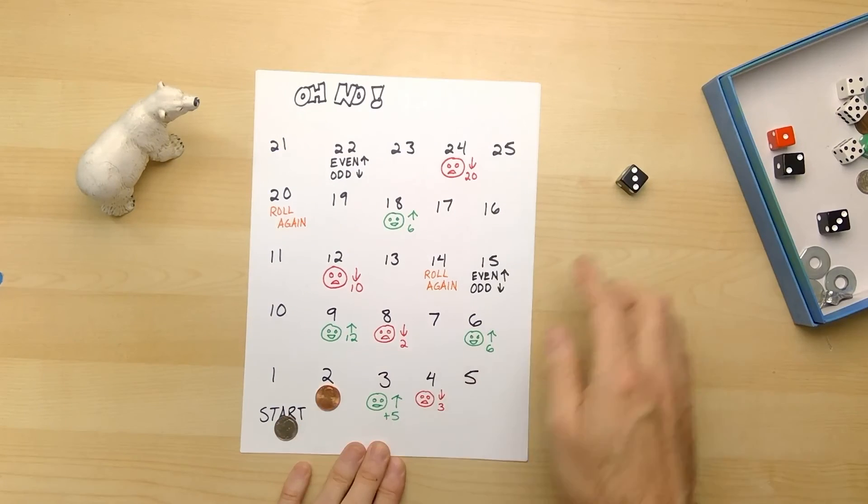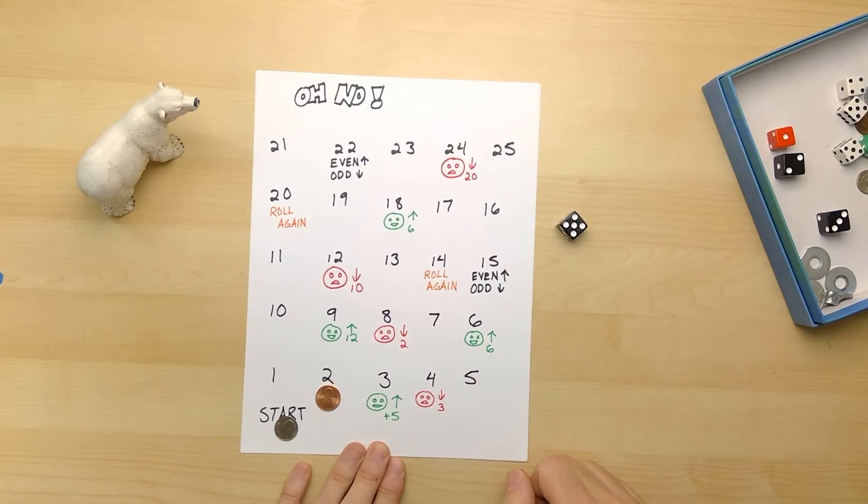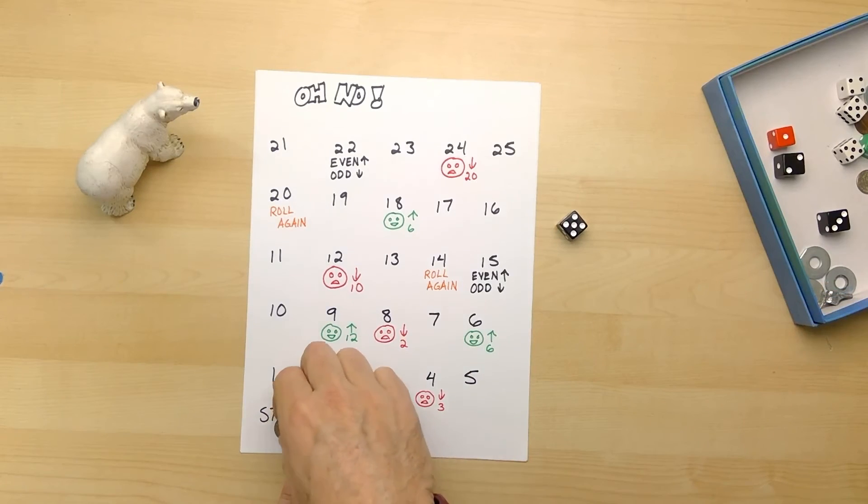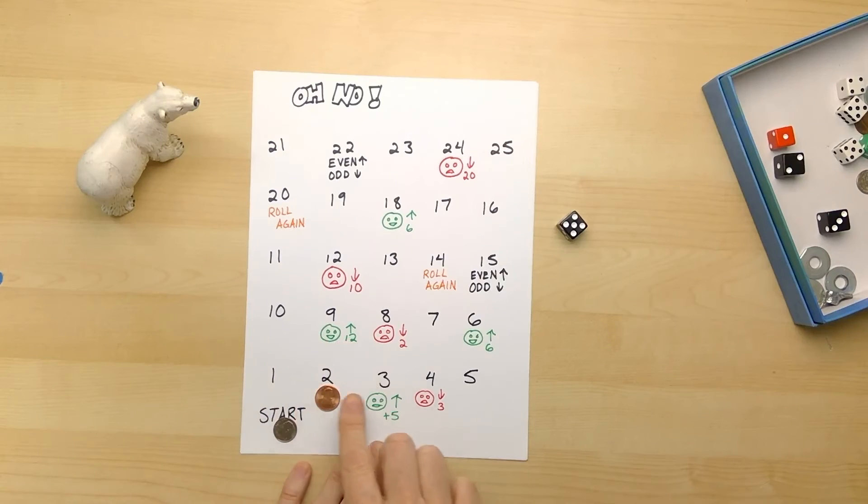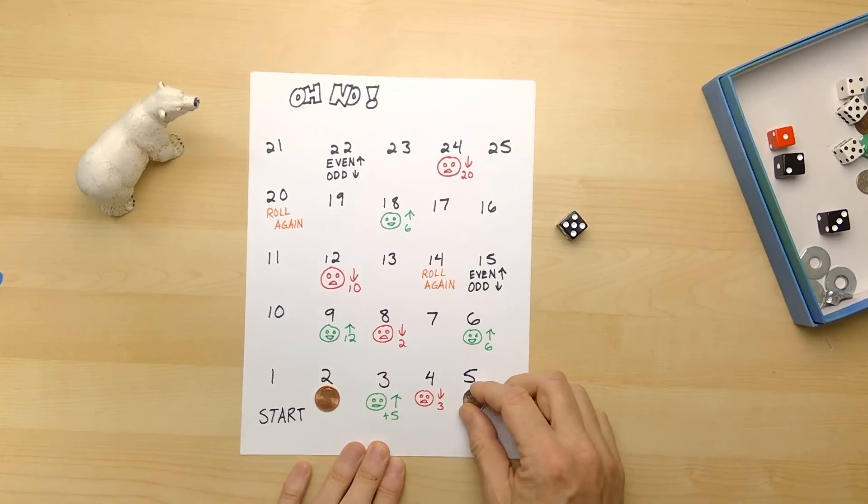It's now silver's turn, and silver is going to roll. And silver rolls a five. Silver rolls a one, two, three, four, five. That's a good roll, everything's safe there.